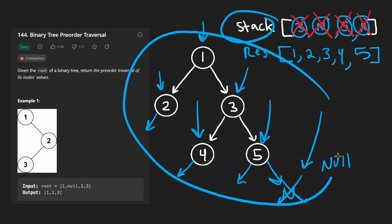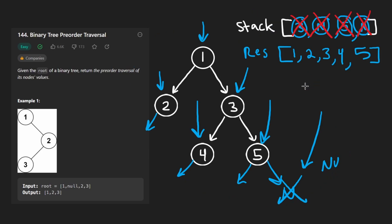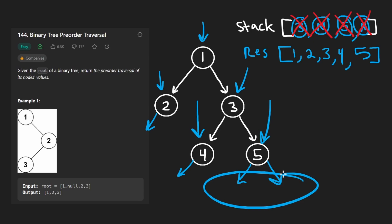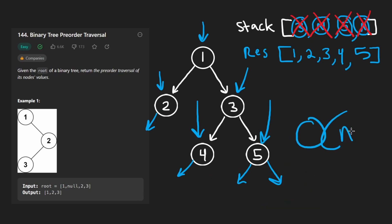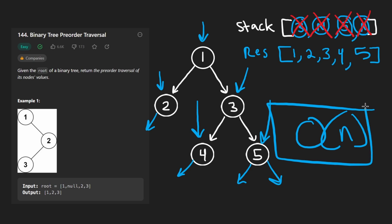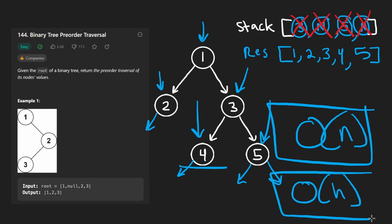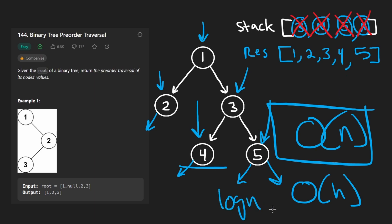That's basically the algorithm. We're pretty much still visiting each node once, and we do visit some null nodes, but that doesn't change the overall time complexity — this is still O(N). We visit each node once, and we do have extra memory for the stack, which is basically the height of the binary tree. In the worst case that could be O(N), or if it's a balanced binary tree it could be O(log N).